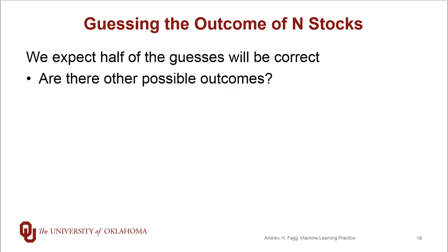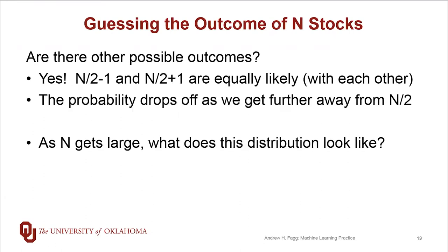Are there other possible outcomes? Yes. For example, n/2 minus 1 and n/2 plus 1 are equally likely with one another and have a reasonable probability of being a true outcome, as well as n/2. We can also look at n/2 plus 2 and n/2 plus 3, and these actually have a real practical probability of happening. However, that probability is going to drop off as we get further and further away from n/2.